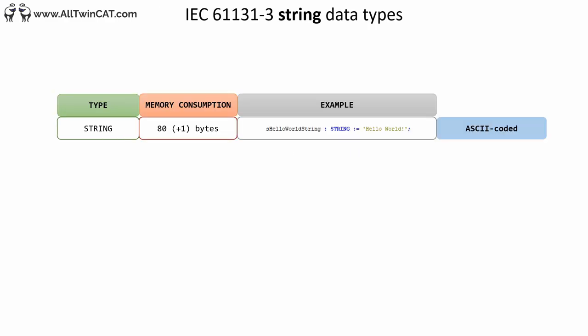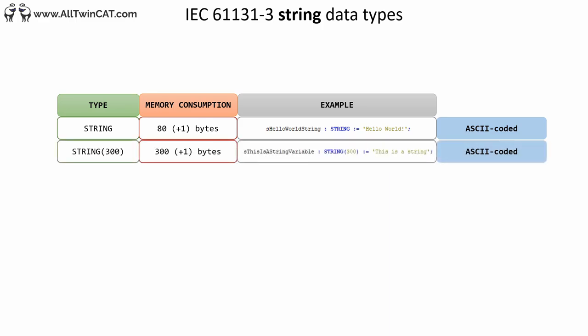With strings you can store textual data. If you declare a variable with the type STRING, it will occupy 80 bytes of data — 1 byte for each character plus 1 byte for null terminating the string. This means you can store up to 80 characters. Even though we can declare strings as big as we want, most built-in functions of TwinCAT 3 to process strings have a limit of 255 characters. Strings are ASCII coded, so each byte is according to the ASCII character table.